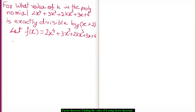Now here, x minus a equals x plus 2, which is equal to x minus minus of 2. So, since the polynomial is divisible by x plus 2, f of minus 2 should be equal to 0.